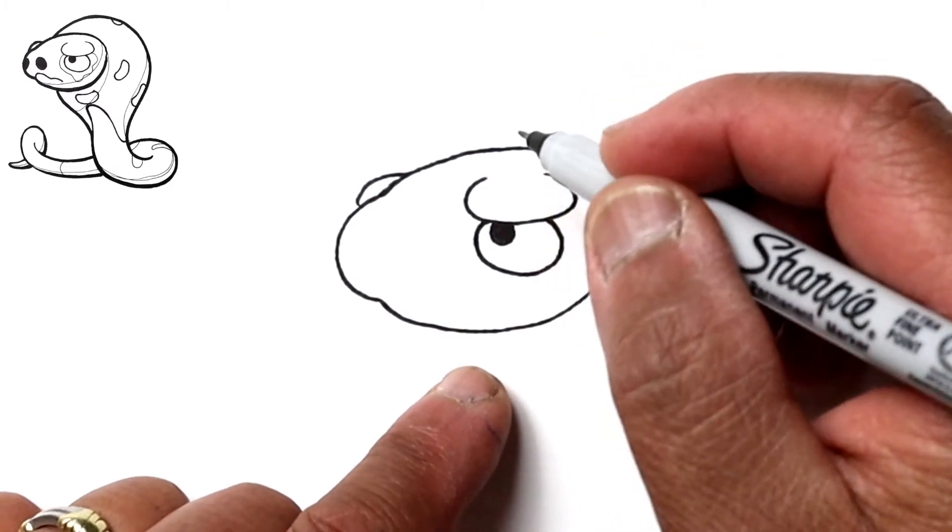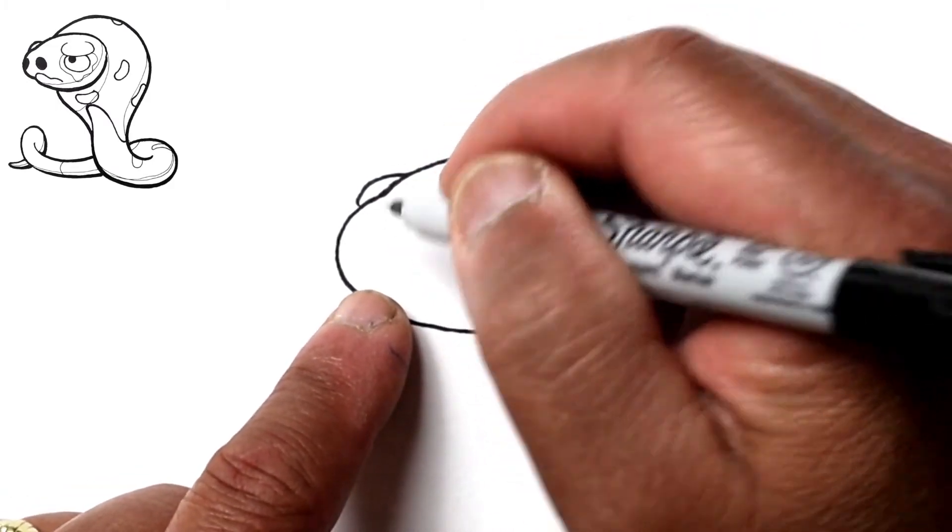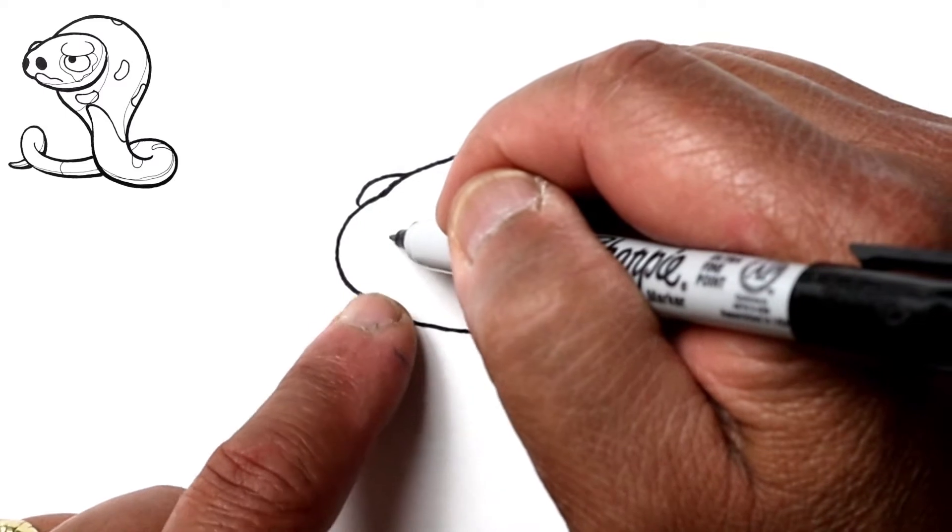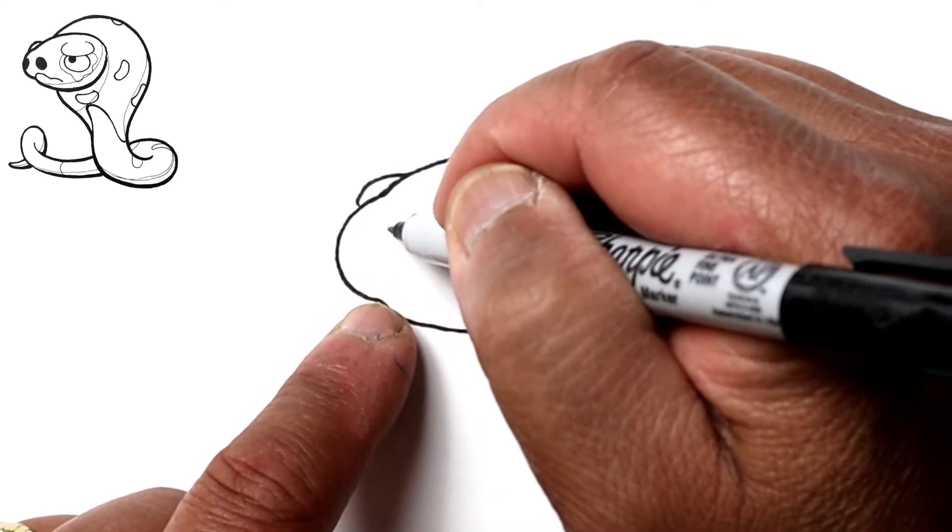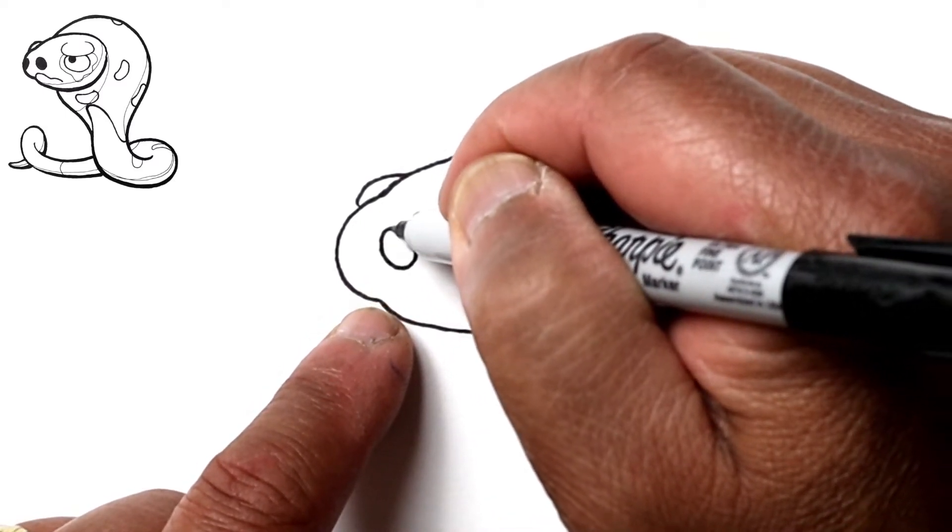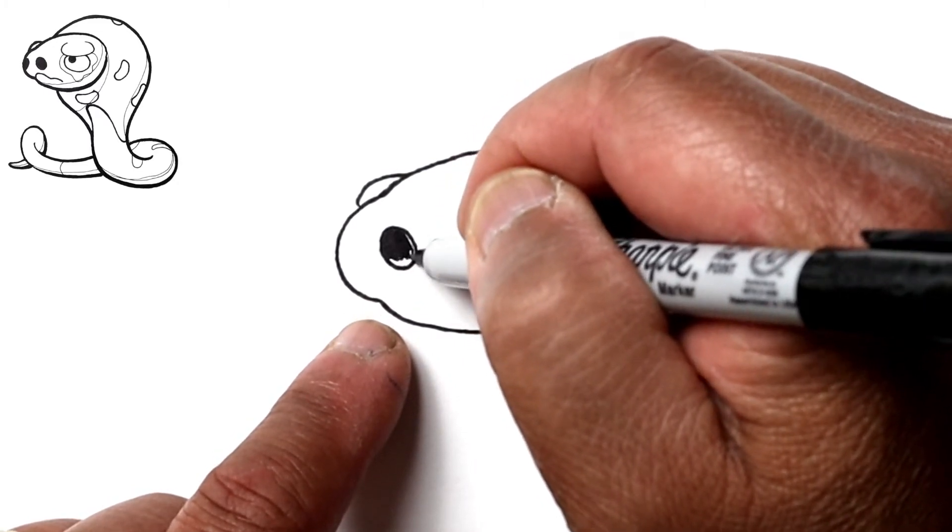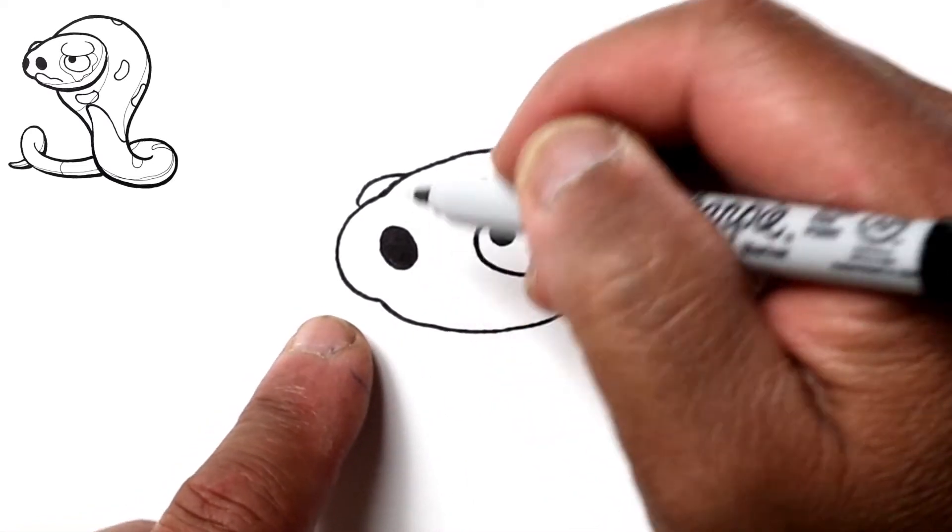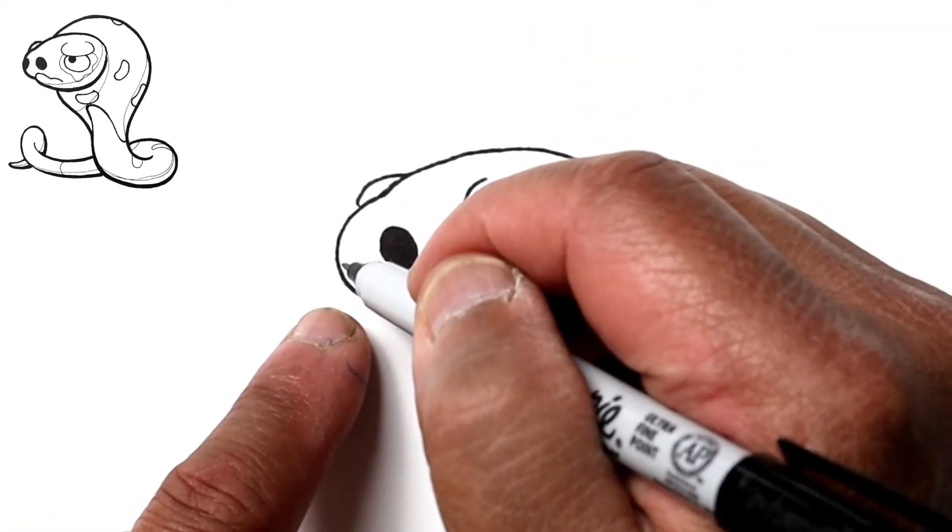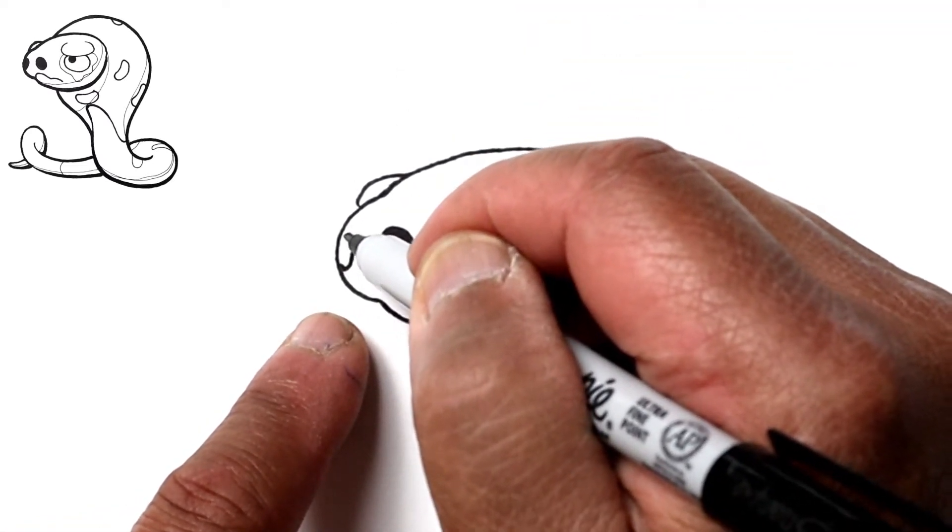Continuing on, we've got the nostrils which are right here. We'll just draw a couple ovals and color those in, and the other oval will be right here and that'll be foreshortened.